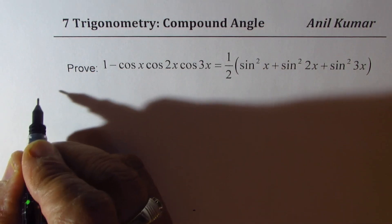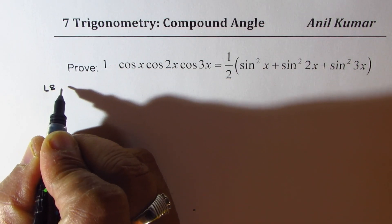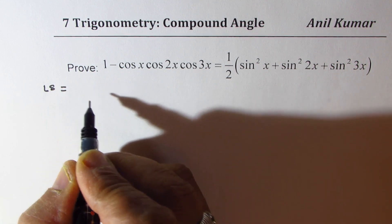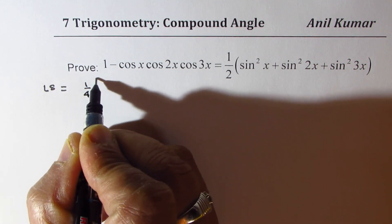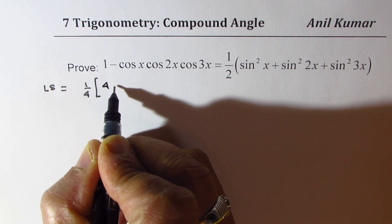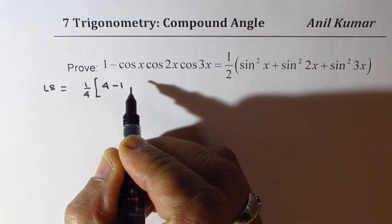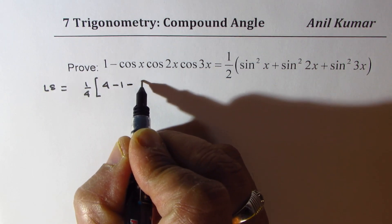So, we have already got the left side as equal to 1 fourth of 4 minus 1. So, I'm just copying the result which we just got.